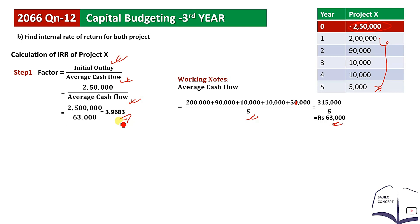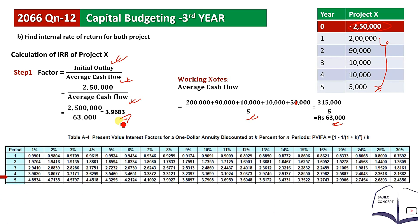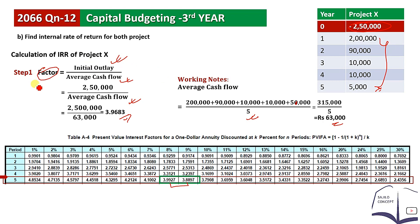This annuity factor of 3.9683 is for 5 years. We look up the PVIFA table across 5 periods to find the closest value to 3.9683. The fake factor has been identified and we check which interest rate corresponds to this value in the annuity table — it appears to fall around 8 or 9%.